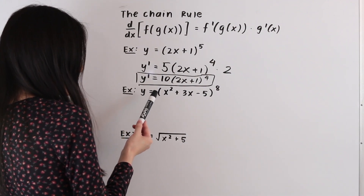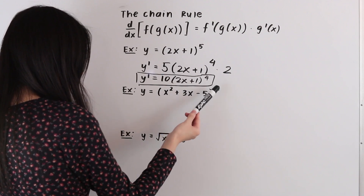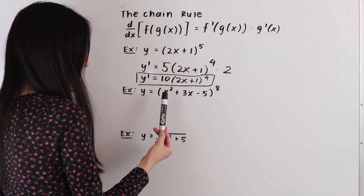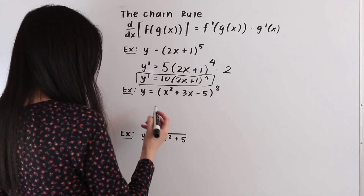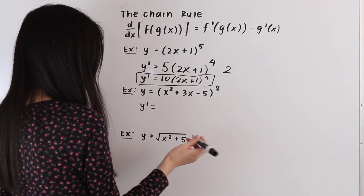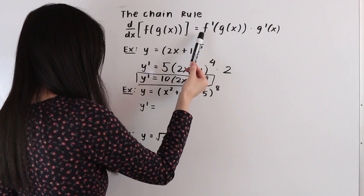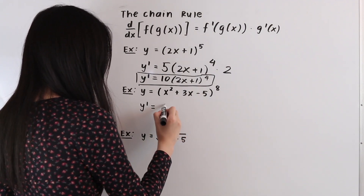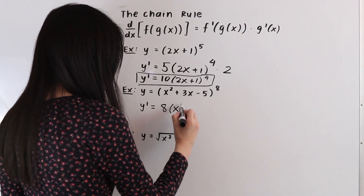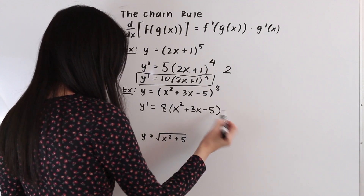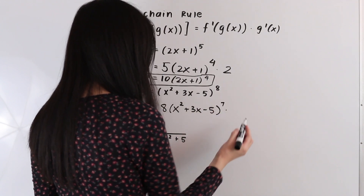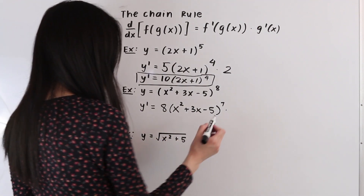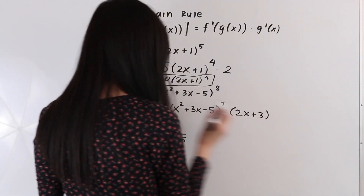In this next example, we have the function y is equal to the quantity x squared plus 3x minus 5 to the eighth power. Again we have a composite function — the outer function is the power of 8 and the inner function is x squared plus 3x minus 5 — so we need to use the chain rule. y prime equals: bring down the 8, keep everything inside the same, subtract 1 from the exponent so we get to the 7th power, then multiply by the derivative of the inside function. The derivative of x squared plus 3x minus 5 is 2x plus 3. This is our final answer.